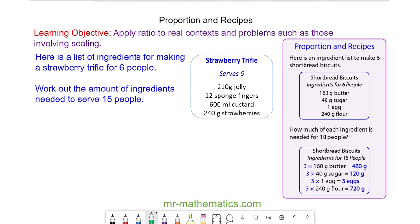Hello and welcome to our lesson on proportion and recipes. We're going to use ratio notation to solve a problem involving recipe ingredients. We have the ingredients to make strawberry trifle for six people, and we're going to work out how many of each ingredient we need for 15 people.